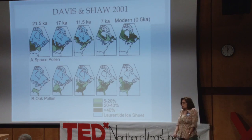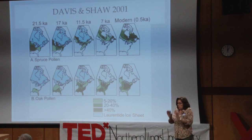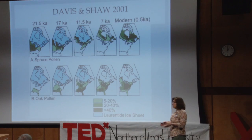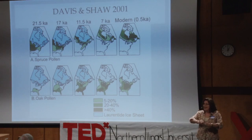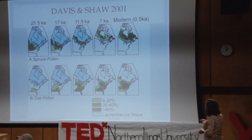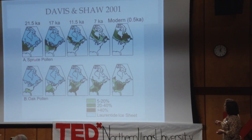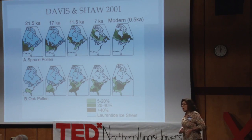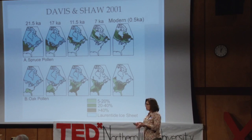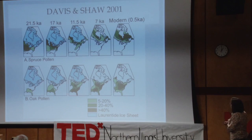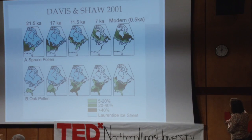We can take those pollen cores, which are spatially isolated — one core from one marsh doesn't tell us much about the entire continent. But when we take a core from every marsh, wetland, and lake across the country and put them together like a jigsaw puzzle, we begin to see that when we were covered in ice, vegetation communities — this dark area showing spruce forests, this one showing oak forests — were marching their way across North America as the ice melted. We can use that breadcrumb trail to go from massive glaciation, with forest constricted to what is today Florida, to what we expect to see today.